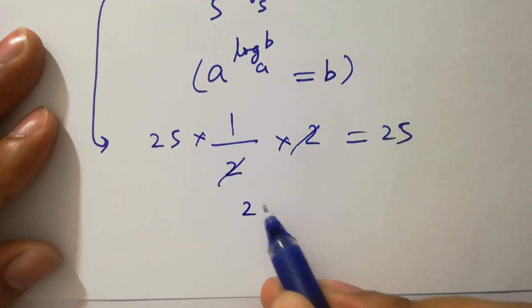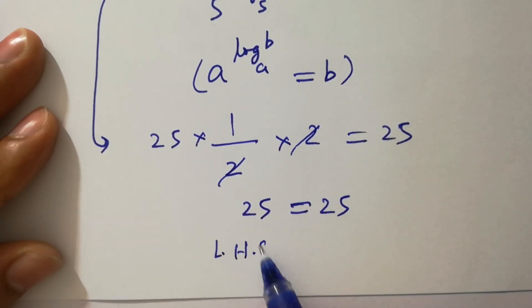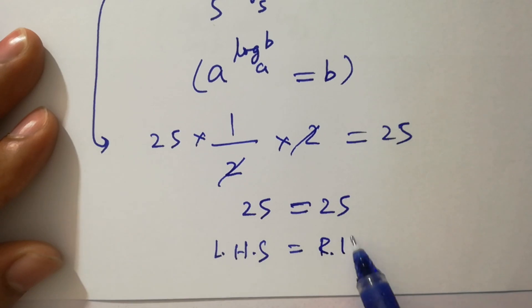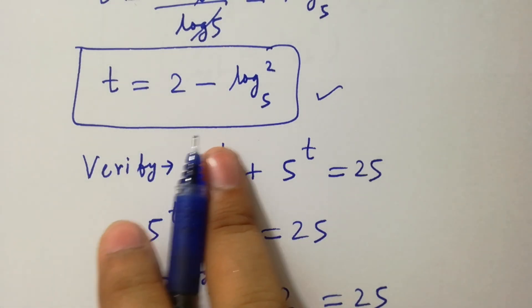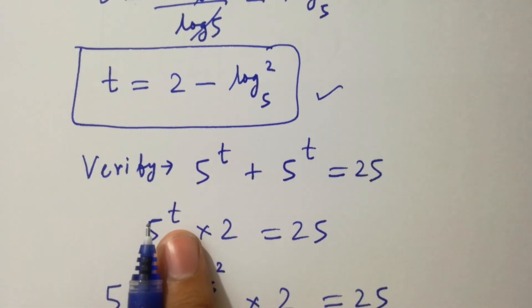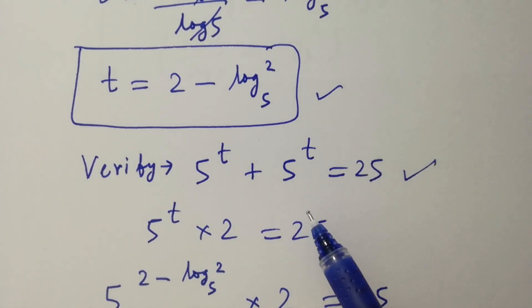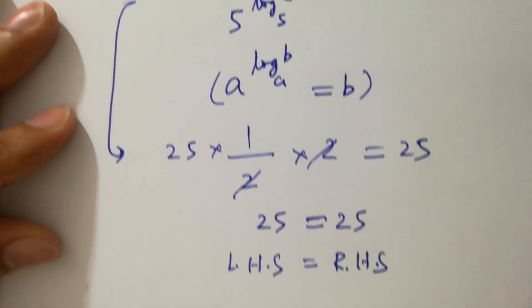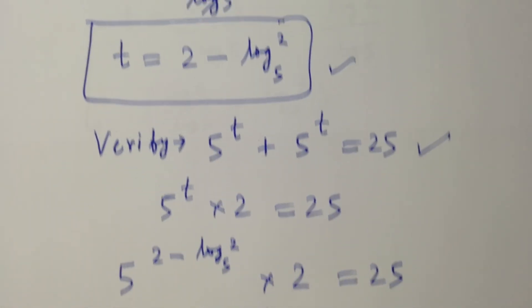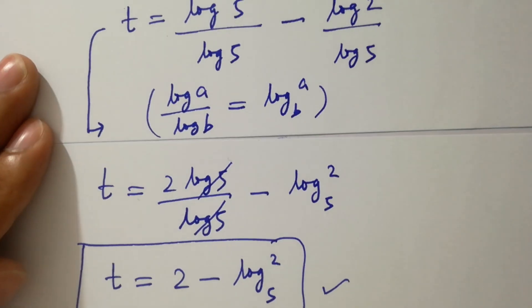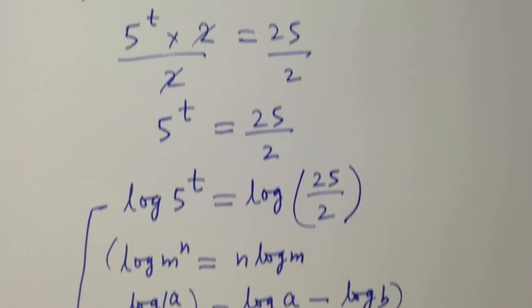We get 25 equal to 25. Left hand side equals right hand side, which confirms the value of t equal to 2 minus log 2 to the base 5 satisfies the equation 5 to the power t plus 5 to the power t equal to 25. Thanks for watching this video. Please subscribe to this channel to get notifications of new videos, and don't forget to share these videos with your classmates and friends so that they also benefit. Okay, bye.